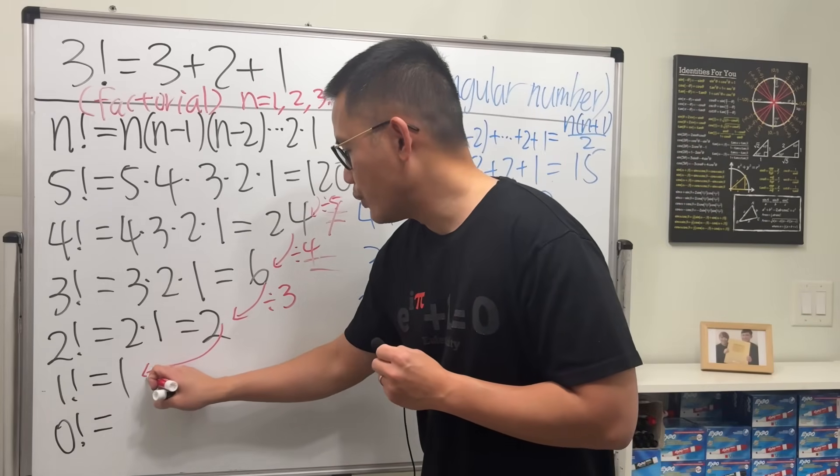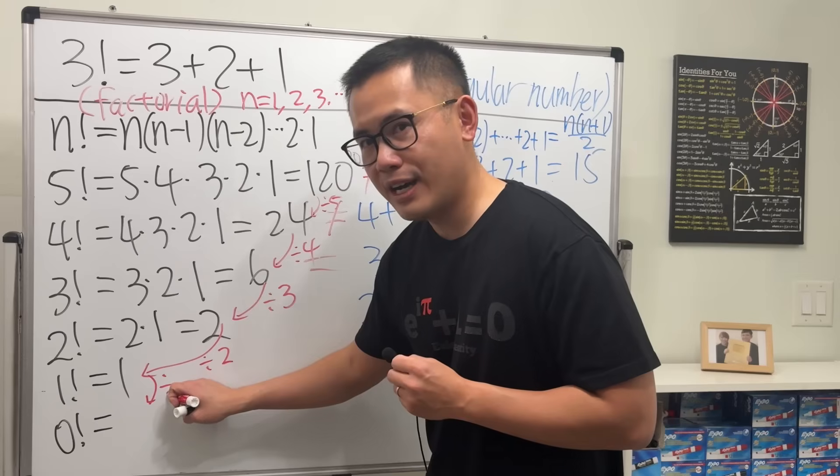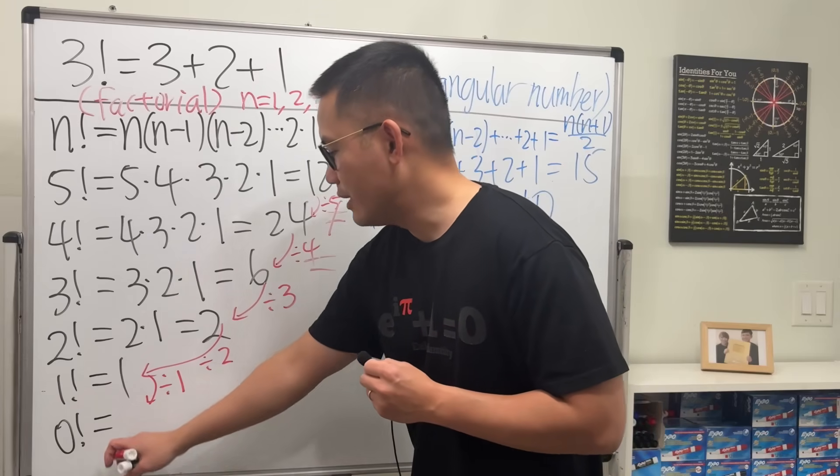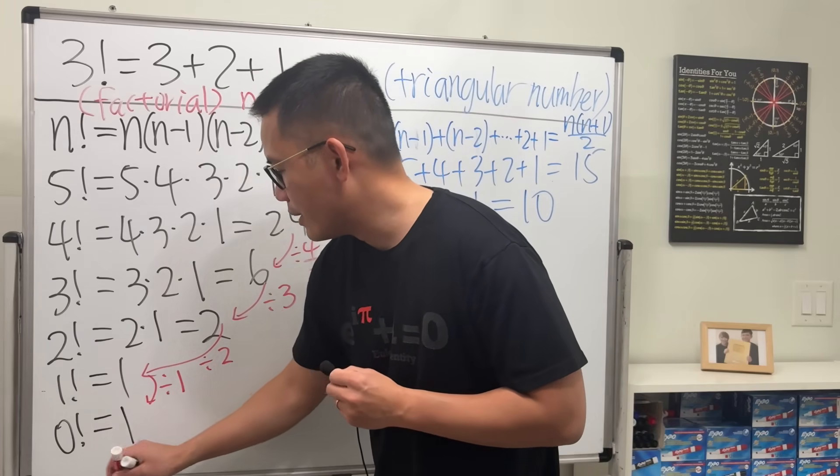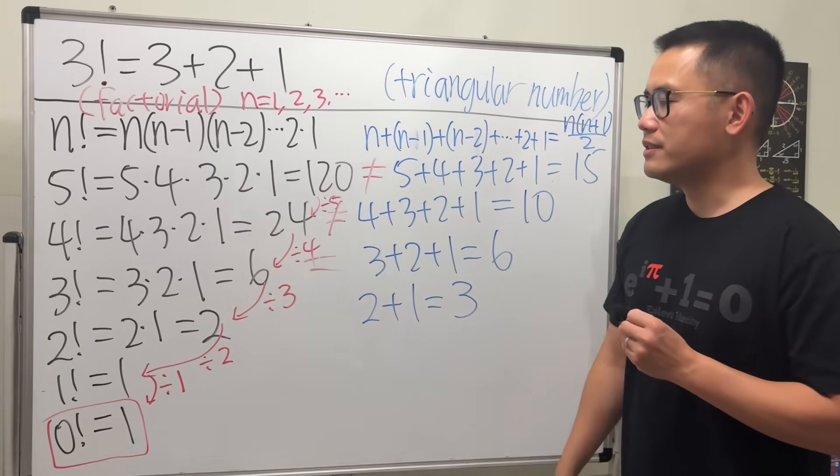3. So we will have to divide by 2, then divide by 1. So 0 factorial is just going to give you 1, which is one of the surprising things in math.